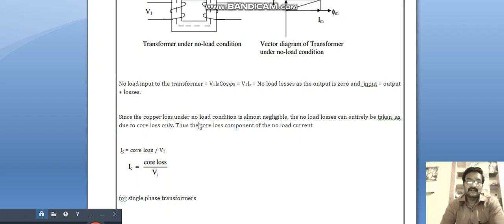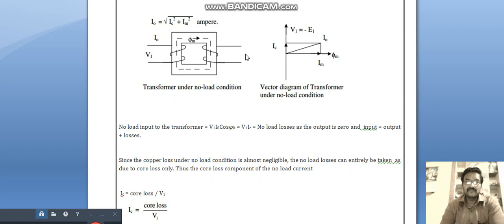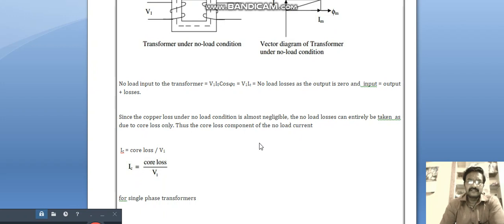Copper loss under no-load condition is almost negligible because we are not connecting any load. Copper loss is nothing but I square R loss. If we are not connecting any load, the I value will not be present in the secondary, so it's negligible.